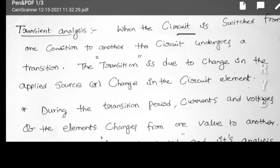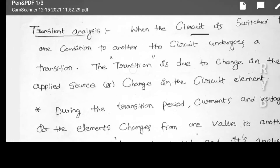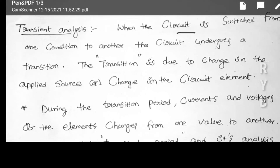Transient analysis is the analysis of circuits during the time it changes from one steady state to another steady state condition. The transition is due to a change in the applied source or a change in circuit elements. If you change the source or the circuit element, transition will happen.